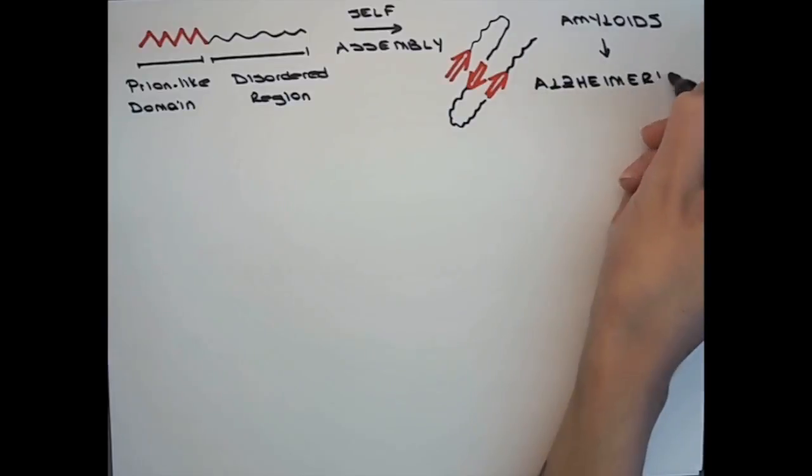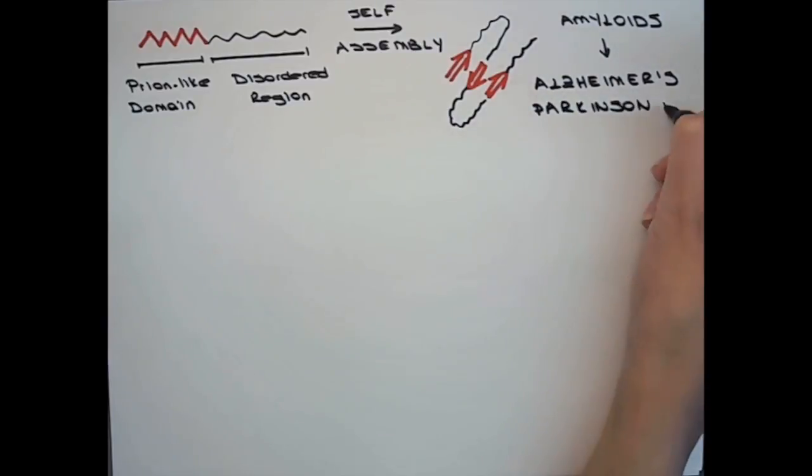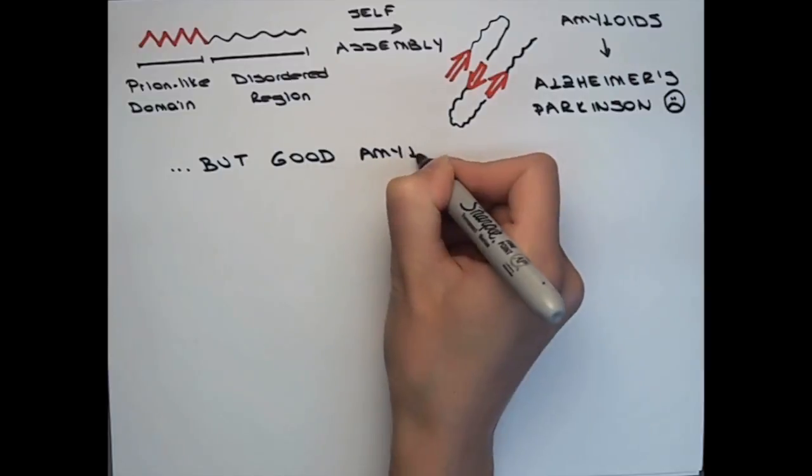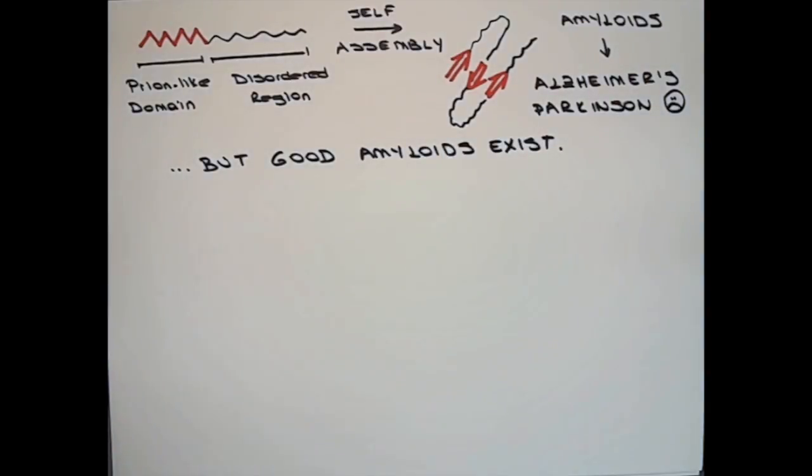Amyloids are mostly studied for their roles in diseases like Alzheimer's and Parkinson's, but they also exist in healthy cells. Could Xfelo be an amyloid glue that protects the organelles in the balbionibody?